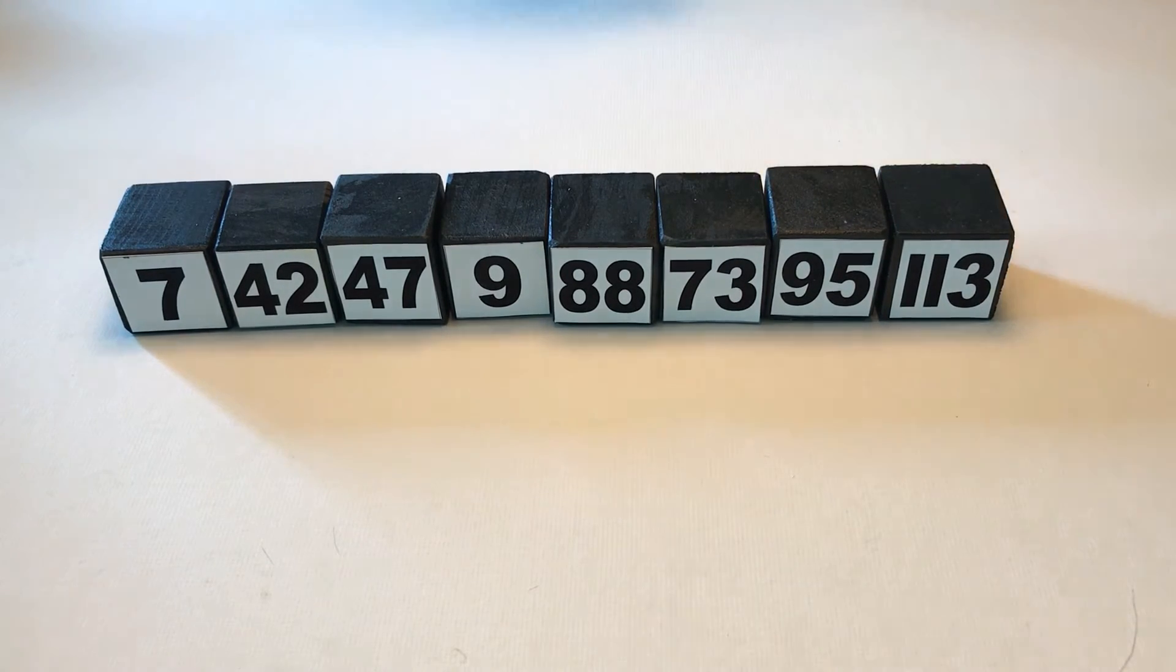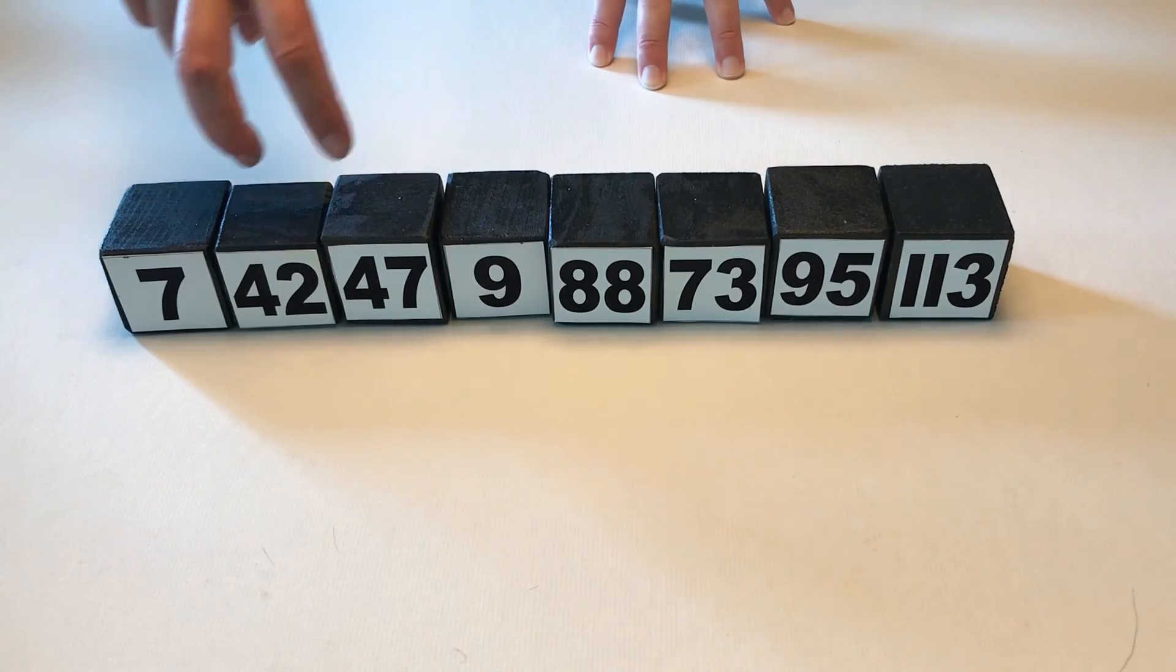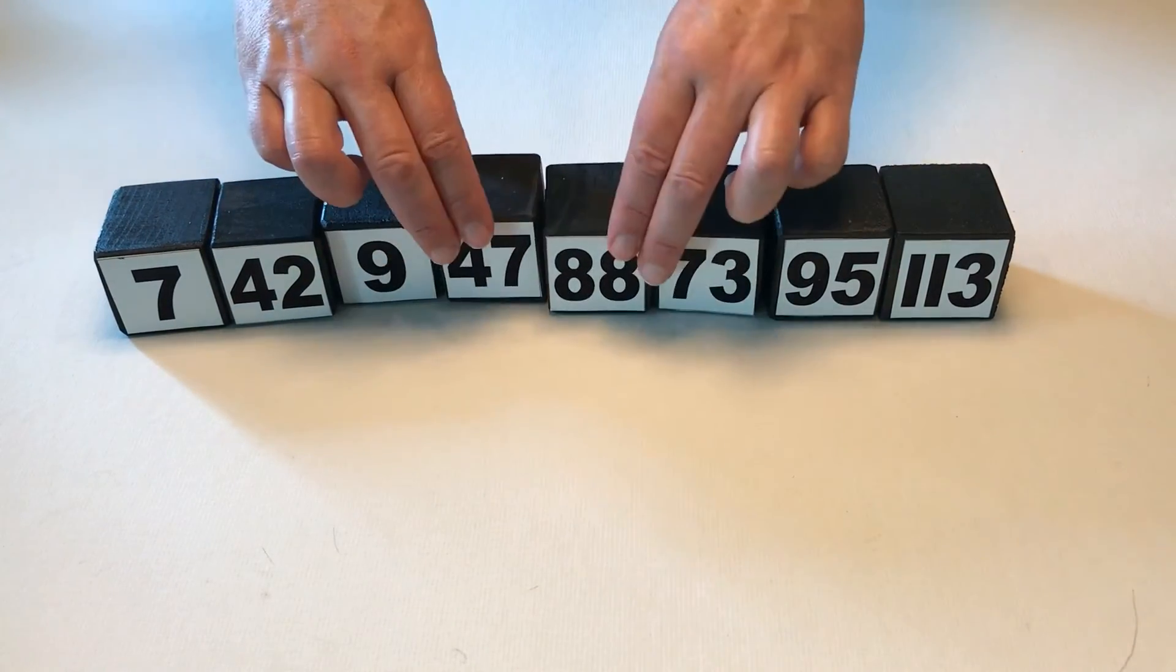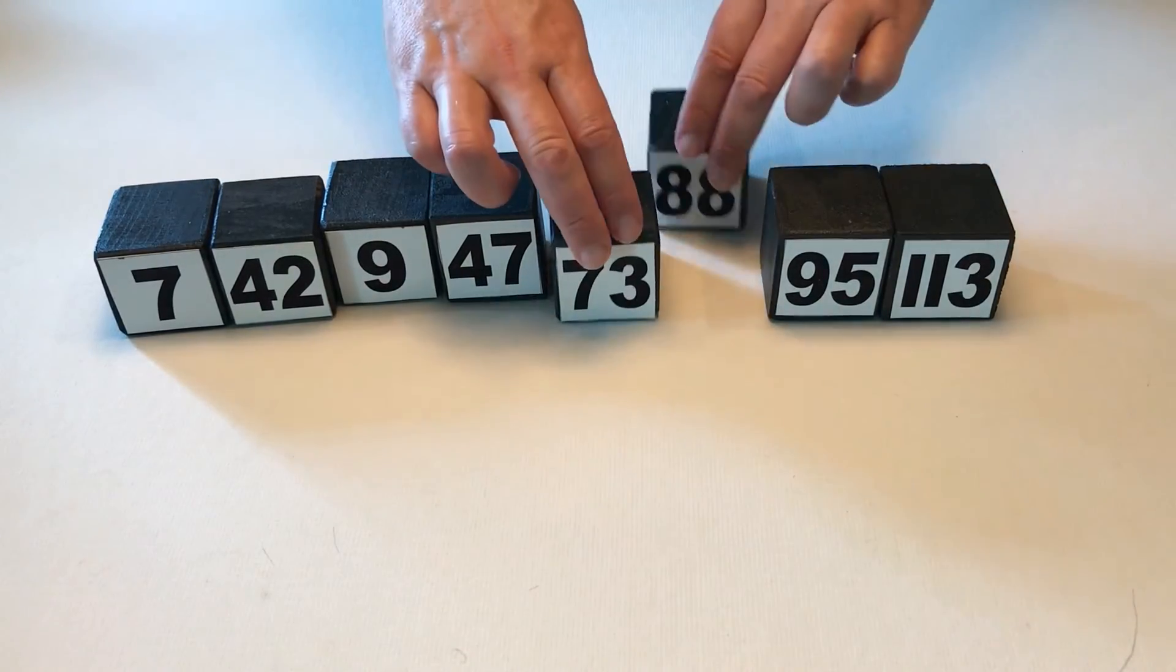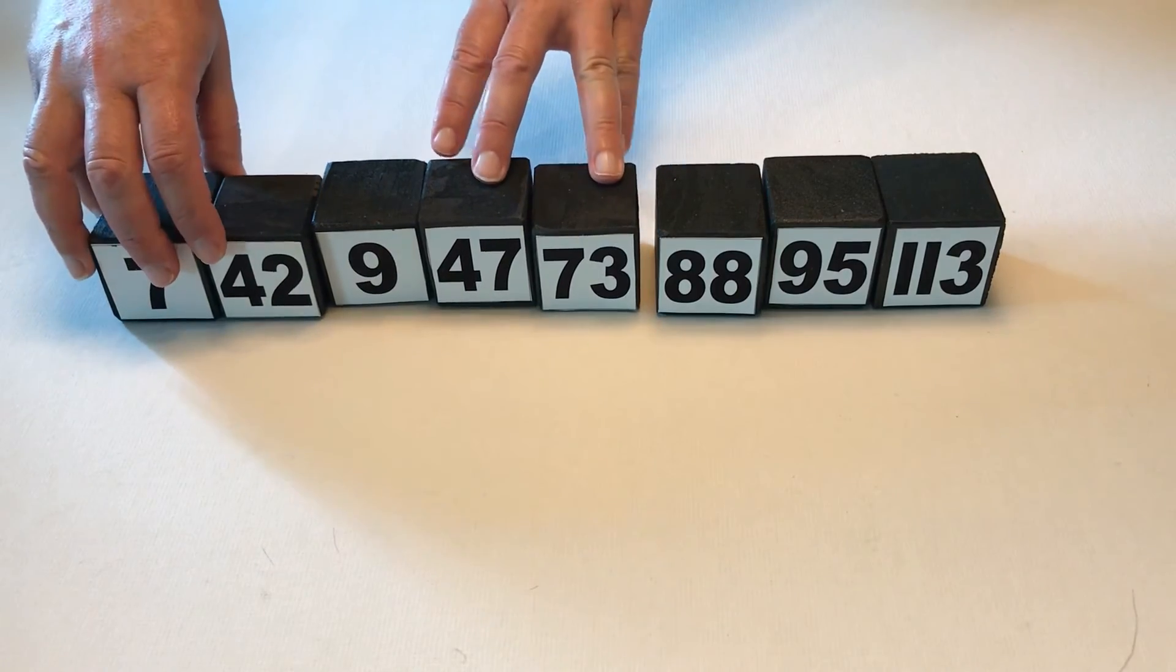Now the outer for loop says do the inner for loop again. Let's make the next pass. We look at these two, they're in order. They're in order. These two need to be swapped. These two are in order. These two need to be swapped. And there we go. Now let's go to the next pass.